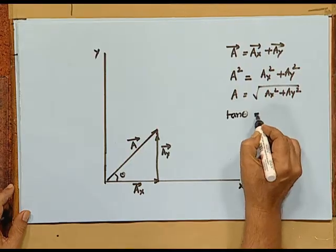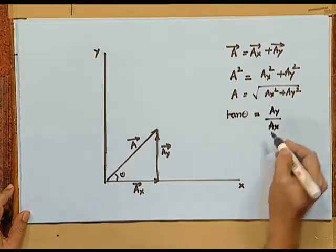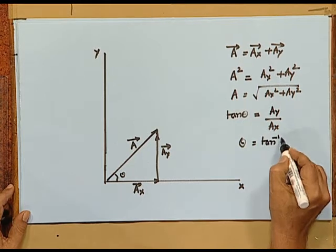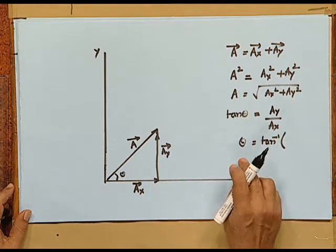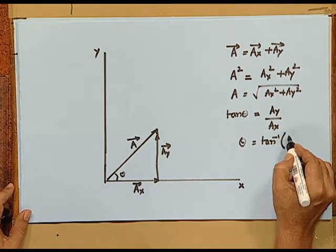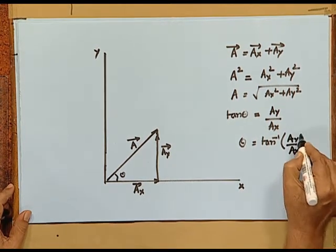What about the direction of this vector in terms of components? Looking at the triangle, tan theta is Ay magnitude divided by Ax magnitude. So theta can be found as tan inverse of Ay by Ax. That is, if you know the magnitudes of Ay and Ax, you know tan theta, and theta can be obtained from the tan table. If the components of a vector are given, you know both its magnitude and its direction.